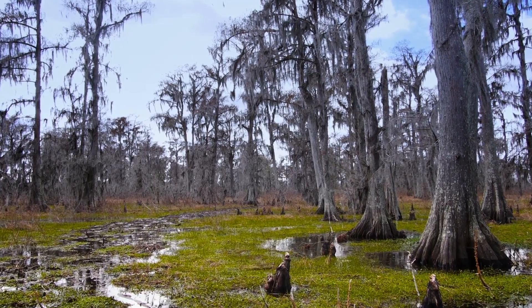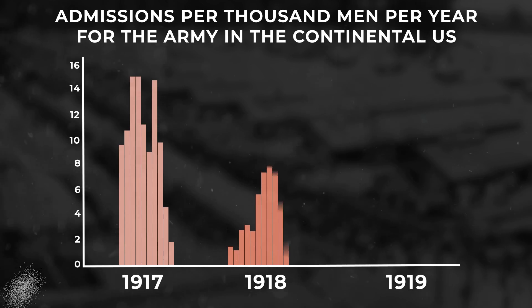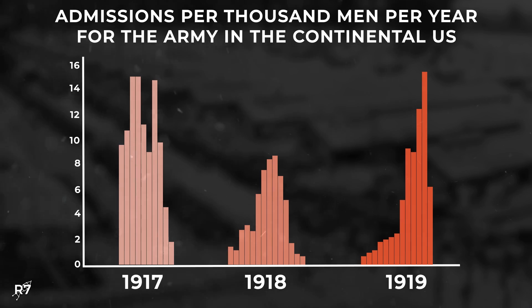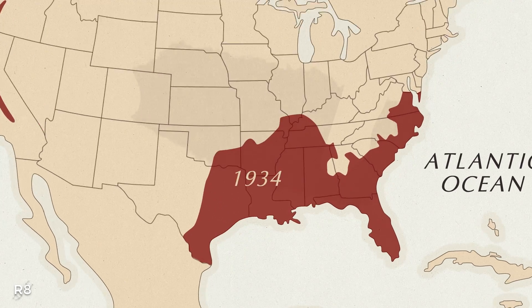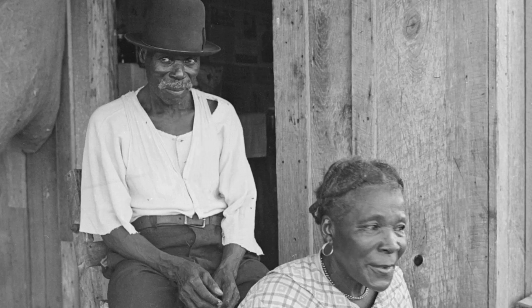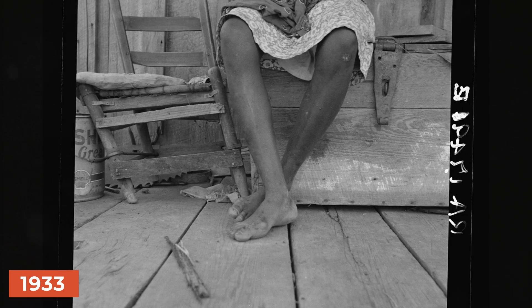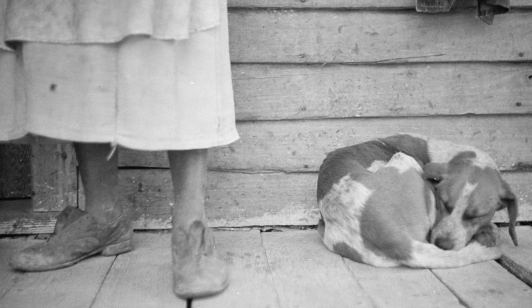Malaria wreaked havoc in America for centuries, and by the time of the First World War it was a huge problem, especially for the military, where men training in the South were picking up the disease in rapid numbers. 10,500 admissions for malaria were reported from April 1917 through December 1919, involving a loss of 130,000 training days. By the 1930s, malaria had become concentrated in 13 southeastern states, with well over a million cases during the Great Depression. Malaria thrives when poverty is high and people lack access to adequate healthcare. But for the next decade, where malaria should have boomed, it instead retreated — and the exact reason why isn't as clear as you might think.